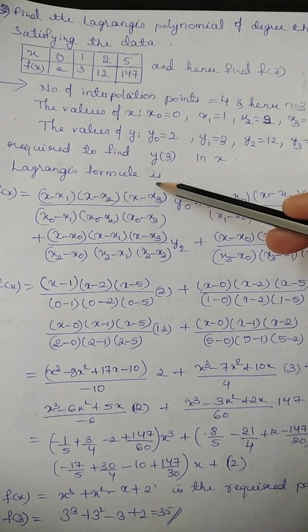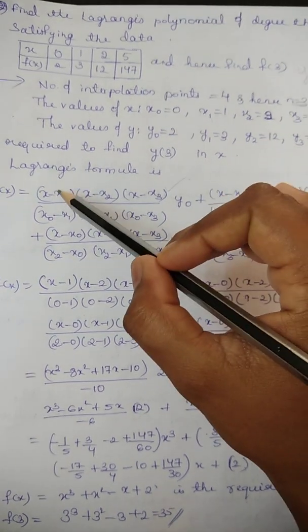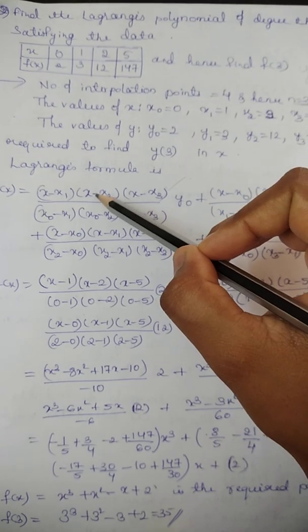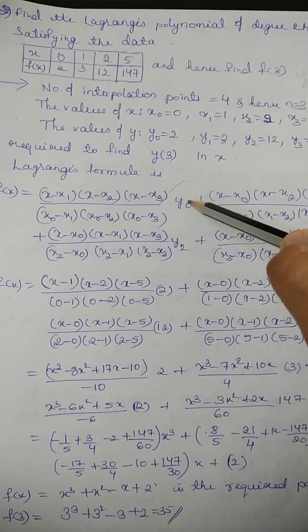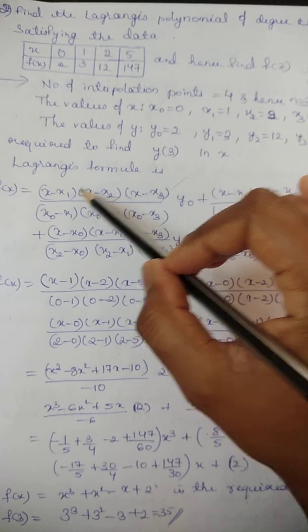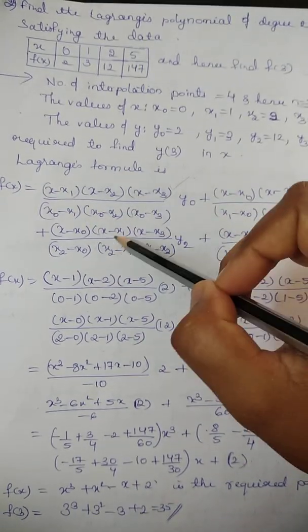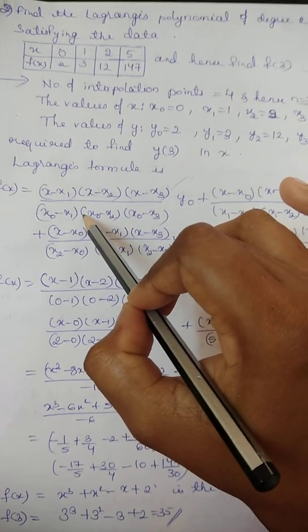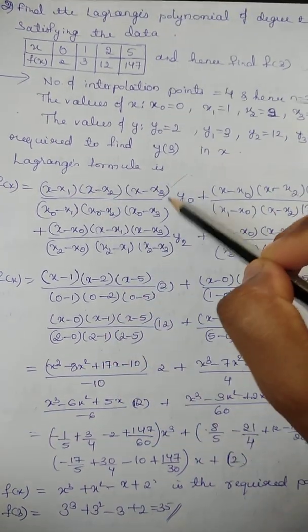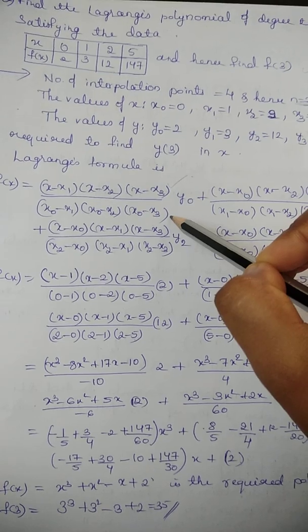Now, let us write down the Lagrange's formula. x minus x1, x minus x2, x minus x3. If it is y0 term, then x0 will not come in the first term. Divided by x0 minus x1, x0 minus x2, x0 minus x3.